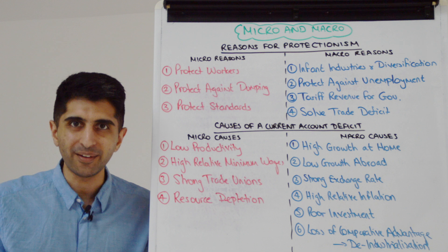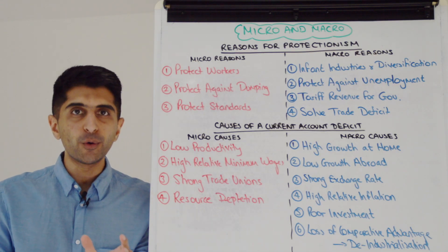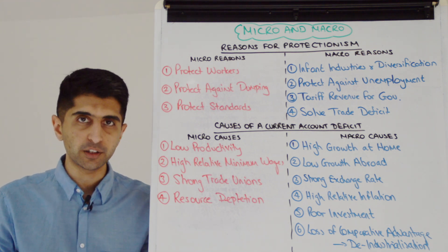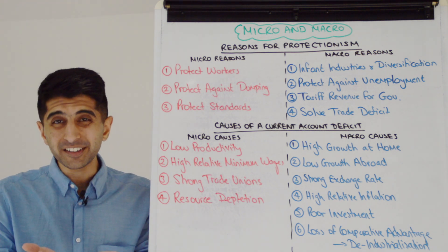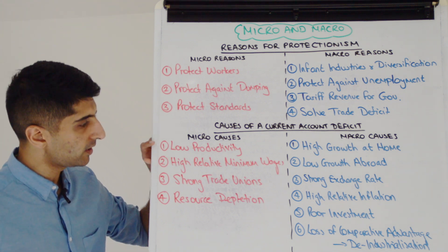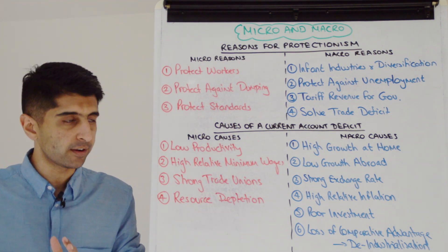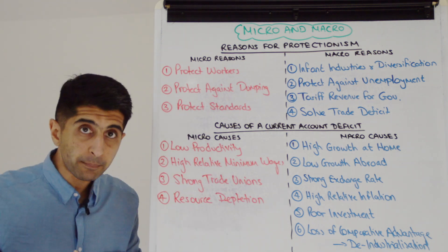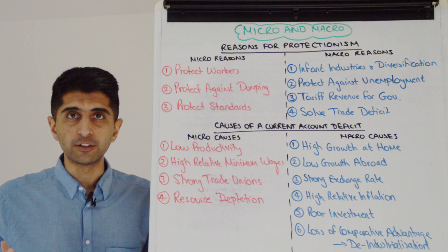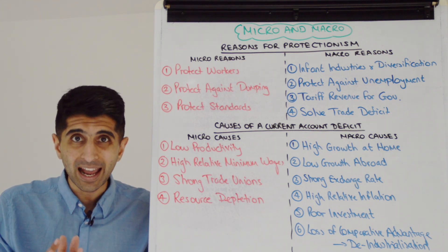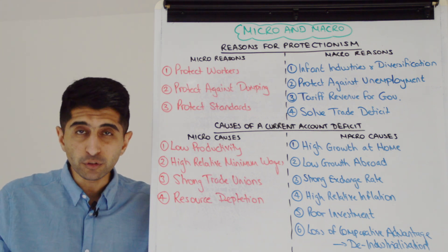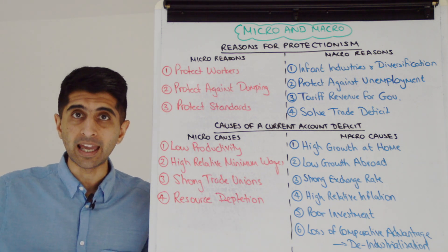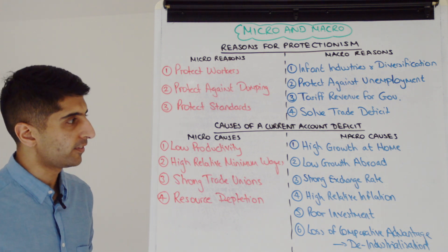Let's do it again for causes of a current account deficit — micro causes first. Points one, two, and three all link to high unit labor costs, which drives up costs of production for firms, meaning prices are higher and exports less competitive. These are: low productivity, high relative minimum wages (relative meaning compared to the rest of the world), and strong trade unions. All three drive up unit labor costs and are separate micro causes. You've also got resource depletion — if an industry was very export-dominant and resources are now depleted, export gains disappear and a current account deficit can result.